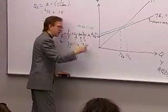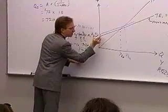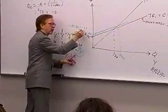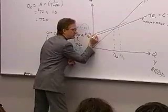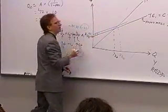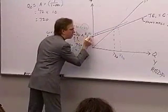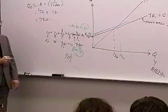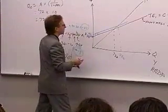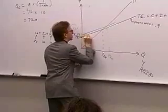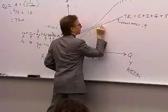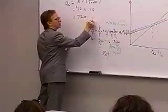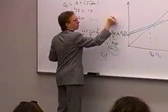Taxes were depressing spending by $18; now they're depressing it by $27. The net effect is taxes depress spending by an additional $9. So autonomous spending goes back down from 82 to 73. I've got two policies here: I increased government spending by $10 and increased taxes by $10.